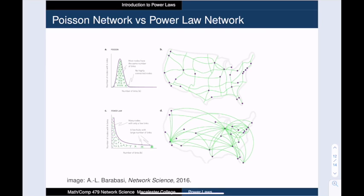To get a sense of the difference between a Poisson or bell-shaped everyday network and a power law network, let's compare two transportation networks. The first is the interstate highway system in the US, and the second is the airline route map connecting those same cities.